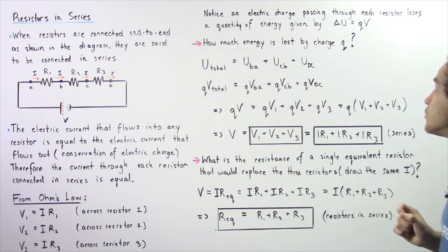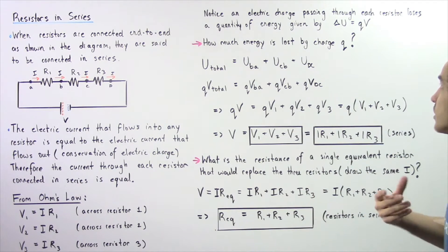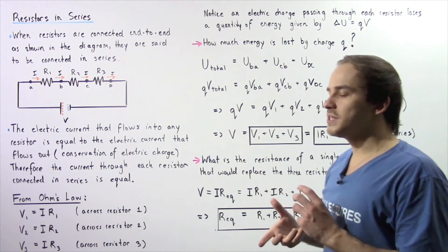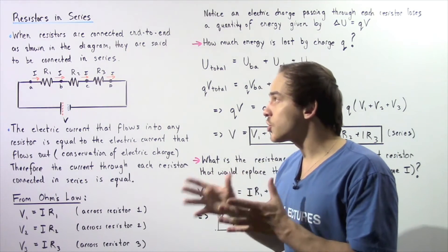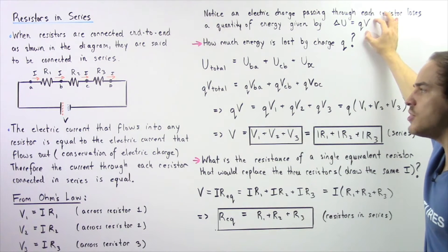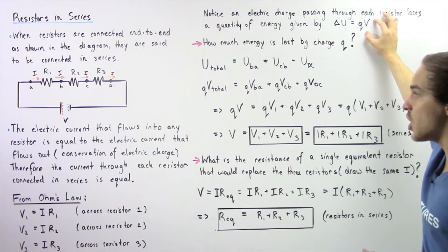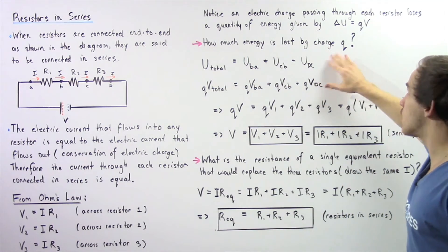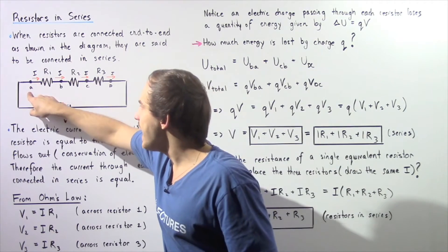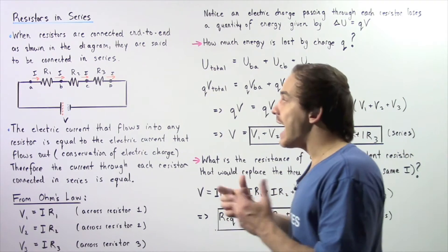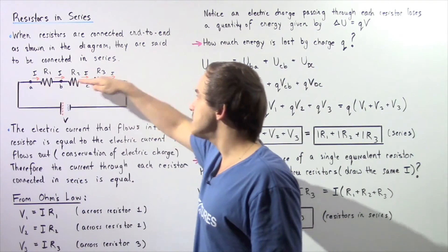Notice that an electric charge passing through each one of these resistors loses a quantity of electric energy given by the following equation. The change in electric potential energy as the charge flows through a voltage difference is equal to the product of the quantity of charge and the voltage difference at that point. So let's answer the following question: how much energy is lost by an electric charge Q that begins at point A and ends up at point D?